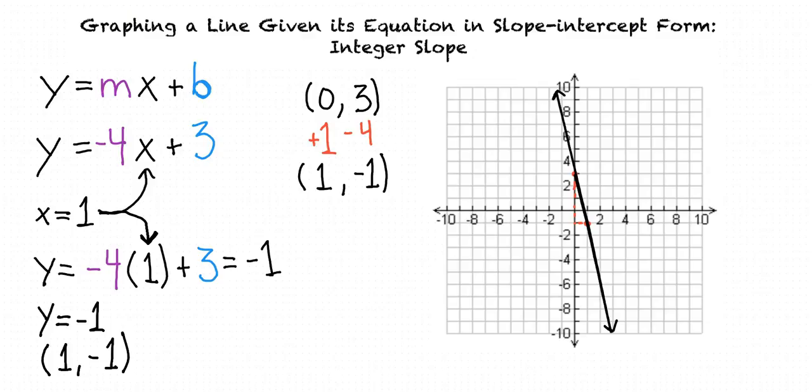So to graph a line given in slope-intercept form, y equals mx plus b, we first plot the y-intercept, given by b, and then we plot another point that satisfies the equation, and finally we connect the two points using a straight line. You got it.